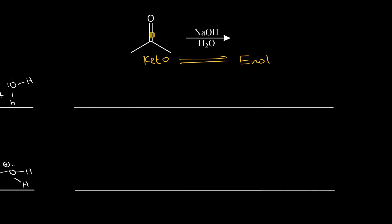Now we're given the same carbonyl — acetone — and asked to do a base-catalyzed keto-to-enol tautomerization. We start by drawing the carbonyl and including all lone pairs, and I'll use hydroxide as the base.